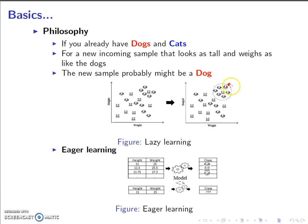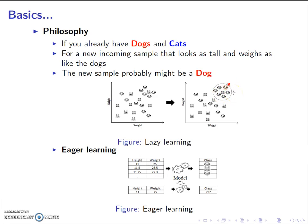Once the scatter plot is built, a new incoming sample is shown by an arrow. We know its height and weight, but we do not know its class and we need to determine it. We plug in the height and weight of this new instance and find, in its immediate vicinity, what other training instances are present. As shown in the figure on the right, there are five instances of dog and one of cat, so our common sense tells us this new sample is a dog. This is exactly how KNN classification works.